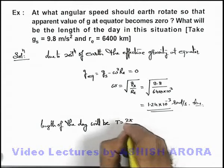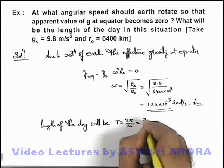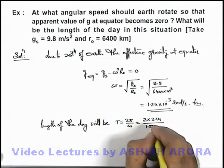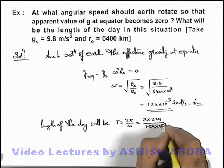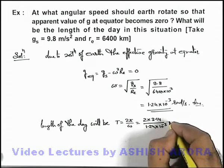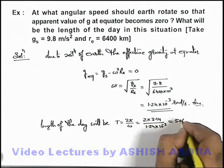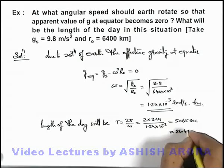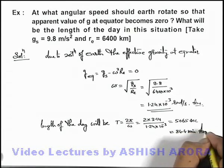This'll be 2π by omega. If we substitute the value it is 2 × 3.14 by 1.24 × 10^-3. On simplifying this will give us 5065 seconds, that is approximately 84.4 minutes. That'll be the answer to this problem.